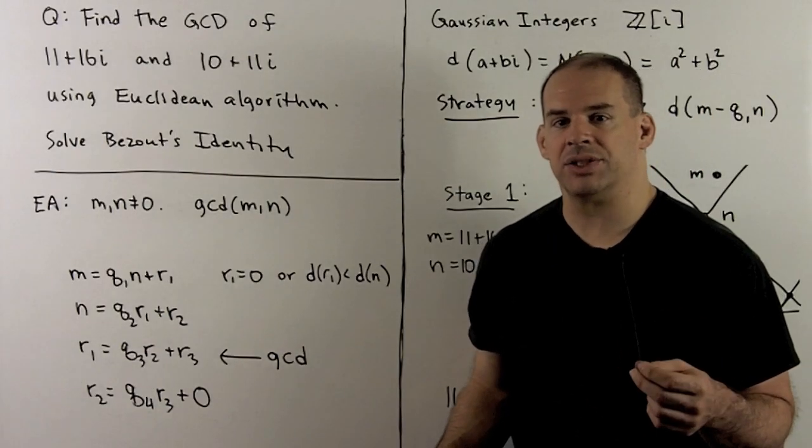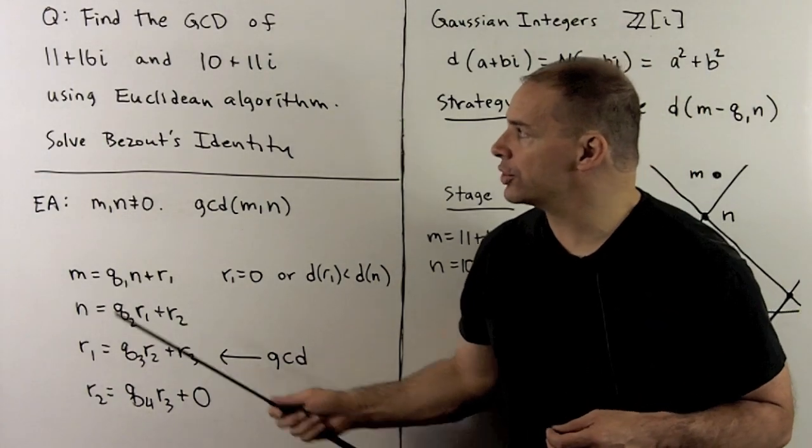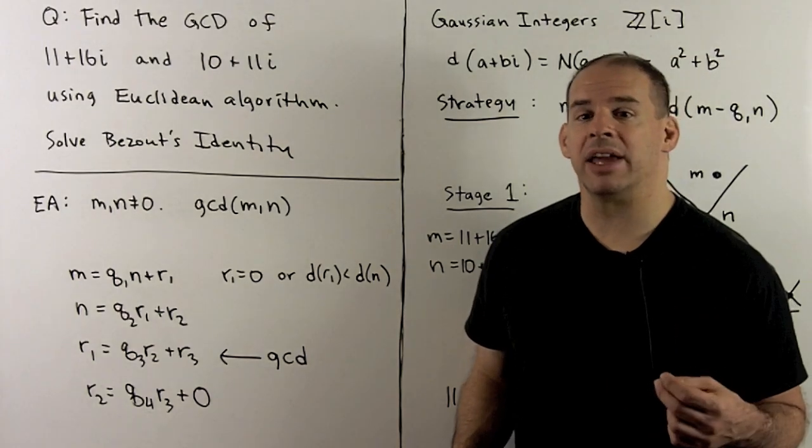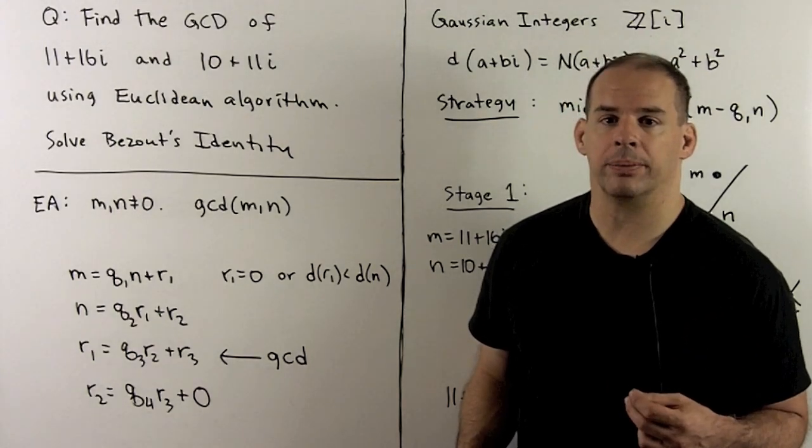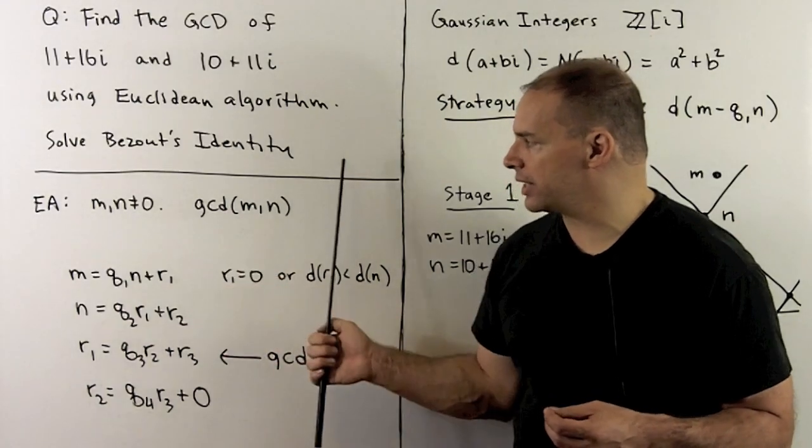As an application of Euclidean domains, I want to find the greatest common divisor of the Gaussian integers 11 plus 16i and 10 plus 11i using the Euclidean algorithm. Once we have that, we'll solve for the coefficients in Bezout's identity.